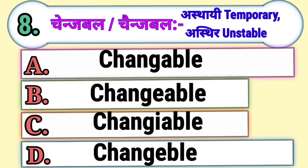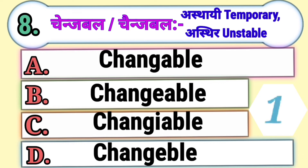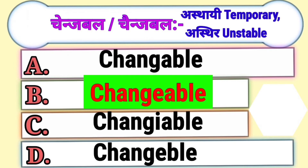Question 8. Changeable means temporary, Asthir, or unstable. Which is the correct spelling of changeable? Option A, Option B, Option C, or Option D. The correct answer is Option B, Changeable.